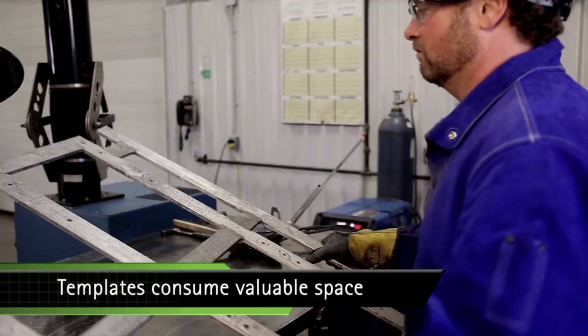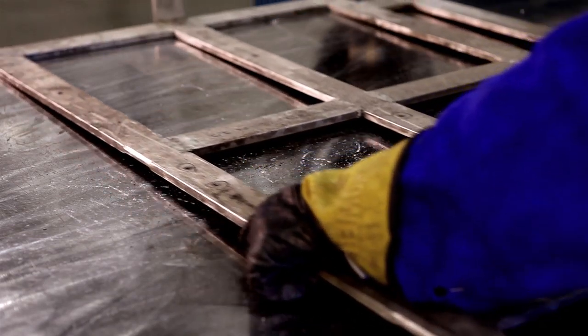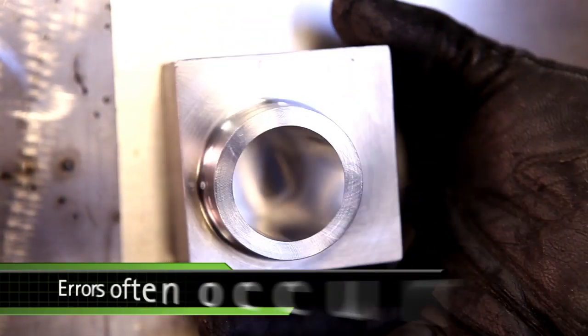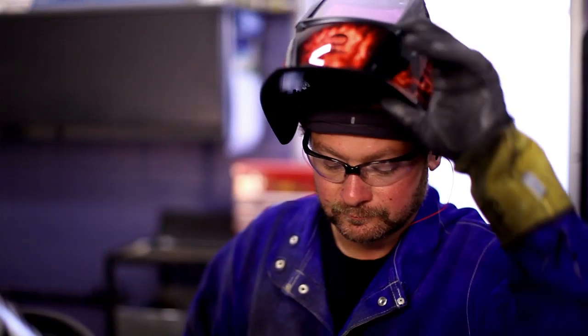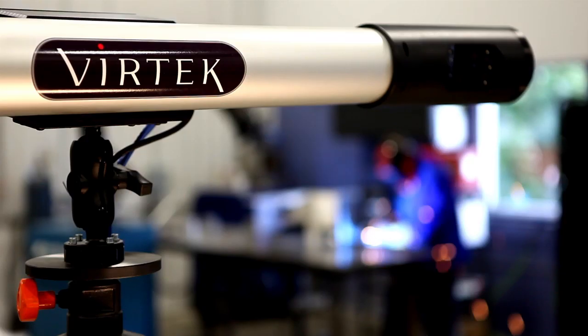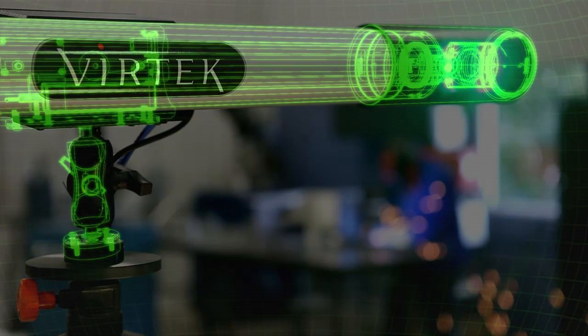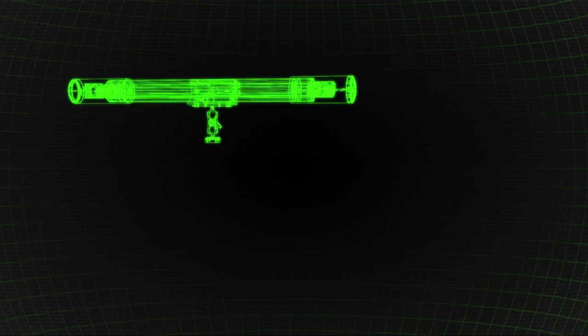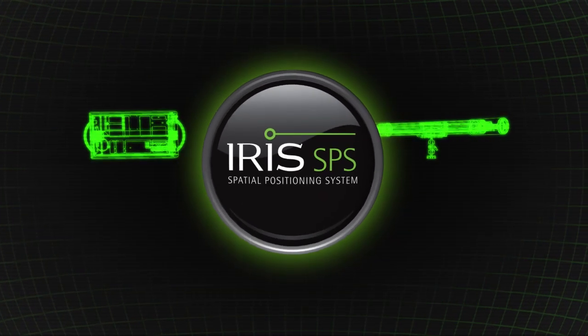Templates consume valuable space and are unwieldy. Welders struggle with alignment, and errors often occur. That's about to change with VERTEX new technology, a breakthrough in manufacturing assembly called the IRIS Spatial Positioning System.